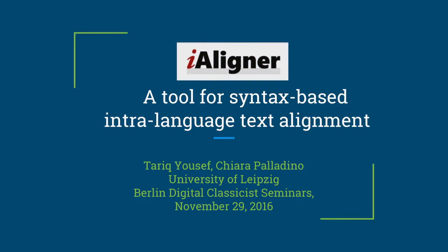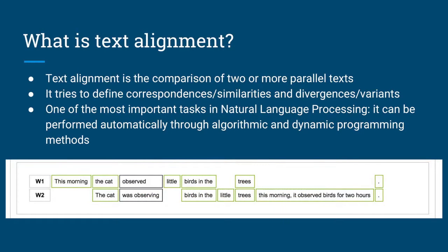The title of the tool may seem complex: a tool for syntax-based intralanguage text alignment. First, let's see what text alignment is. Text alignment is a comparison between two or more parallel texts. That means we have two texts — maybe one is a translation of the other, or they are related as different editions of the same text. It tries to find the correspondences and differences between these parallel texts. It is one of the most important tasks in natural language processing.